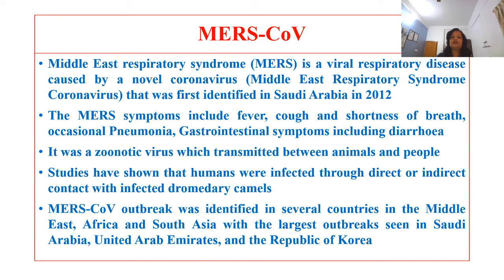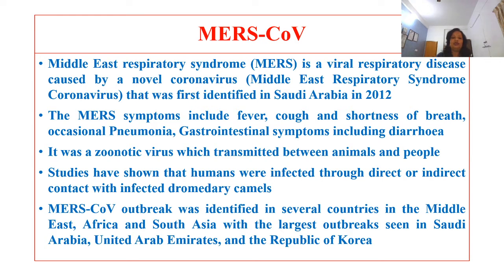It was a zoonotic virus which is transmitted between animals and people. Studies have also shown that humans were infected through indirect or direct contact with infected dromedary camels. The MERS coronavirus outbreak was identified in several countries in the Middle East, South Africa, and South Asia, with the largest outbreak seen in Saudi Arabia, United Arab Emirates, and the Republic of Korea.